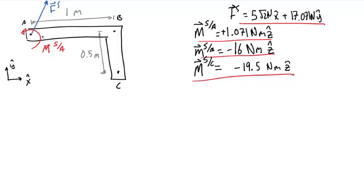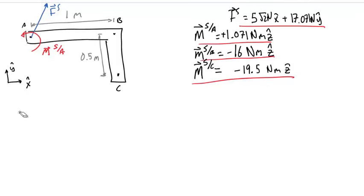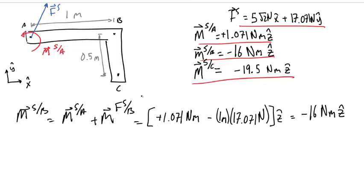To prove this, the moment at B from this equivalent force couple should be the same as in the previous system. To find the moment about B, we take the moment at A plus the moment generated by the force on the system at A about point B. We find that when summed at B, the result is negative 16 newton meters — equivalent to the moment calculated from the original system.